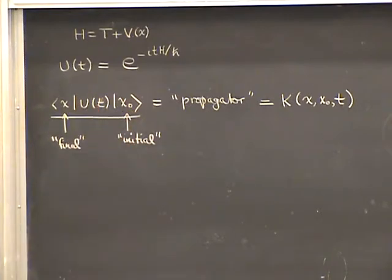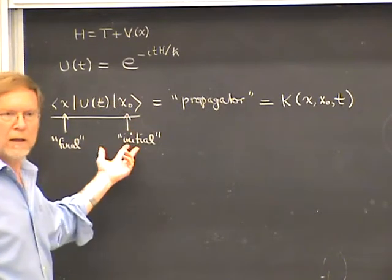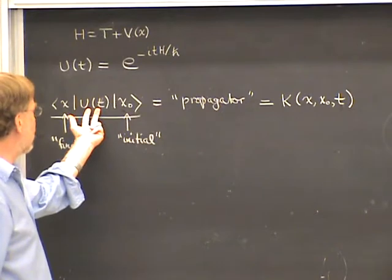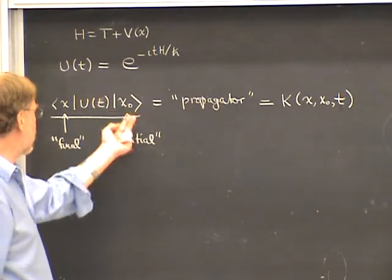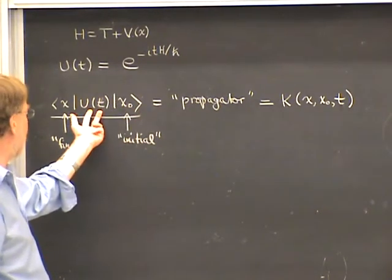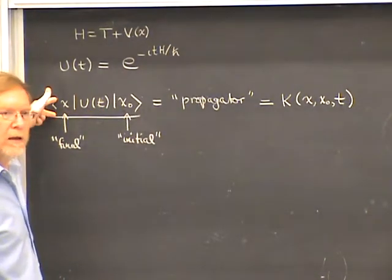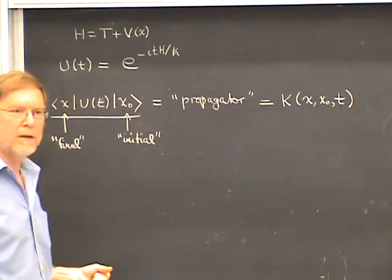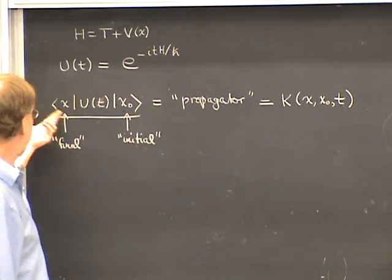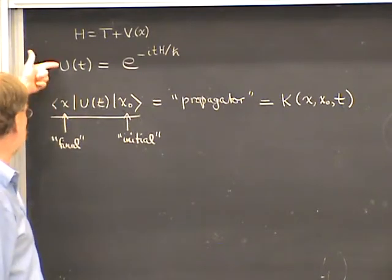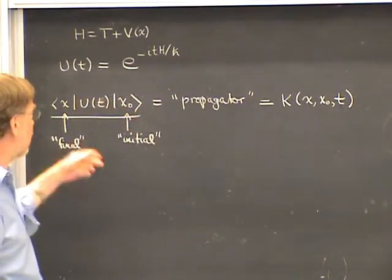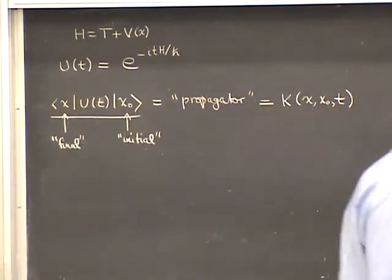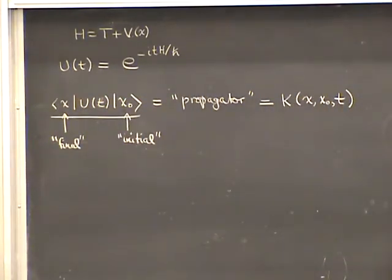If we apply U(T) to that state, it's like saying we knew the particle was at position X₀ at the initial time, we let it evolve in time, and then when we take the scalar product with ⟨X|, we find the amplitude to find the particle at a particular final position at a later time. Squaring gives us a probability density for finding the particle at some variable final position — it's an amplitude to find the particle at a final position given that it was at some initial position at some initial time.